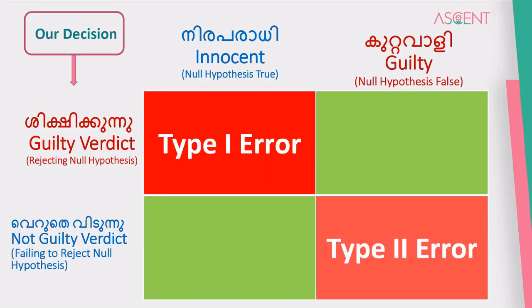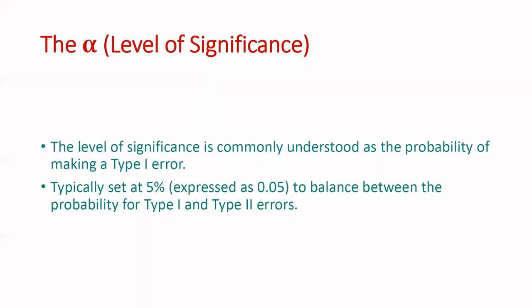We have a question about Type 1 and Type 2, and the level of significance of alpha. This is the Type 1 error, which is denoted by alpha, the significance level.